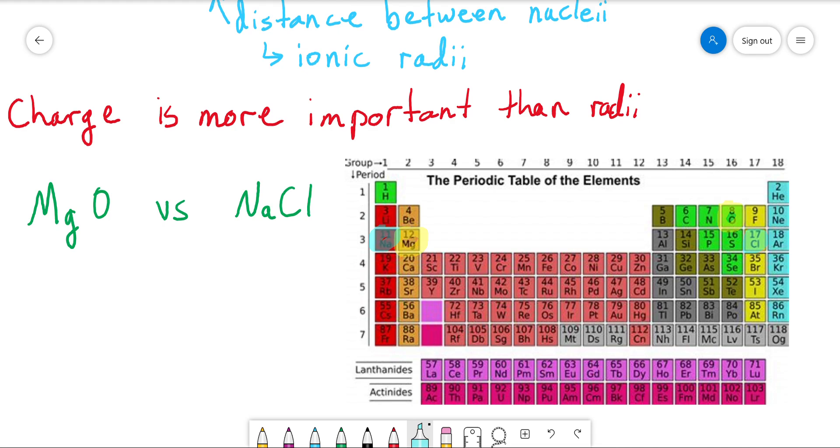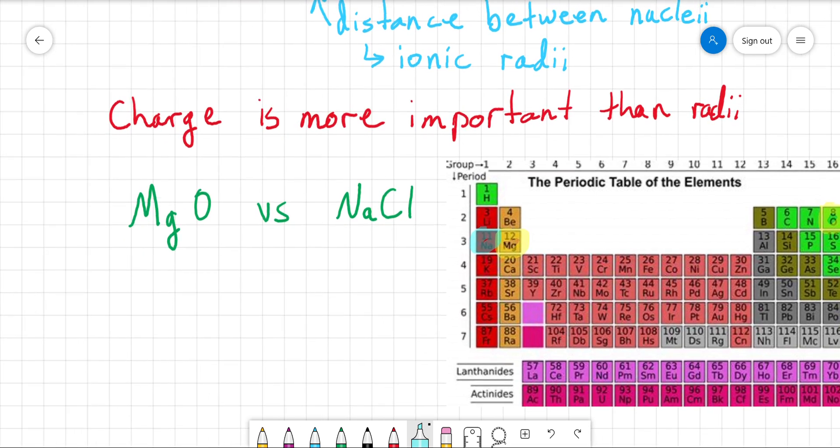Well, obviously, between the anions, chloride is bigger than oxide. Between the cations, they're a pretty similar size. But more importantly than that, what is the charge on these ions?